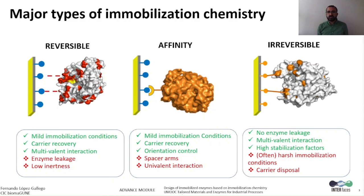Finally, irreversible immobilization avoids enzyme lixiviation or leakage during the operational process, can promote multivalent interactions, and stabilize the immobilized enzymes to a larger extent than the other two types of immobilization chemistry. But at the expense, irreversible immobilization can recover low specific activity upon immobilization. This activity loss is normally due to the harsh immobilization conditions needed for this type of chemistry. An additional drawback is that the carrier must be disposed together with the enzyme when it is inactivated.